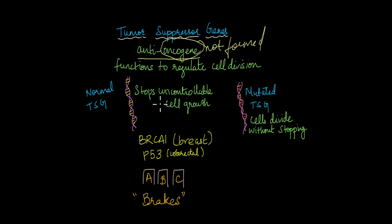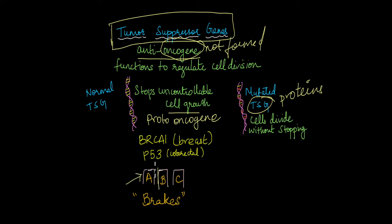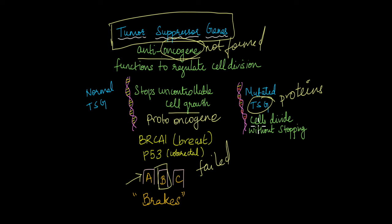A normal tumour suppressor gene will stop uncontrollable cell growth by detecting any mistakes in the proto-oncogenes. But sometimes there is a mutation in the tumour suppressor genes themselves. In that case, these mutated proteins are incapable of detecting the mutated oncogenes. Even if the accelerator is still stuck, the brakes have also failed — the accelerator is stuck and you cannot slow down the car because the brakes have failed. These mutated TSGs cannot detect any other mutation in the cells, and those mutations keep accumulating and getting passed down to newly forming cells, which is what causes cancer.